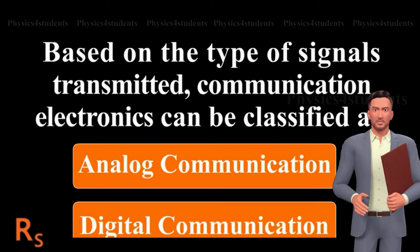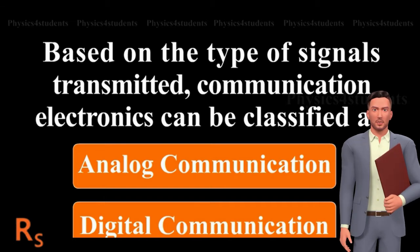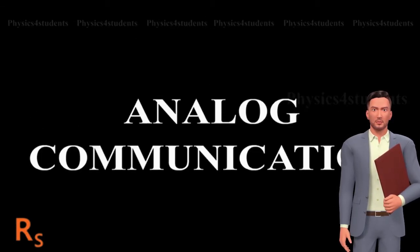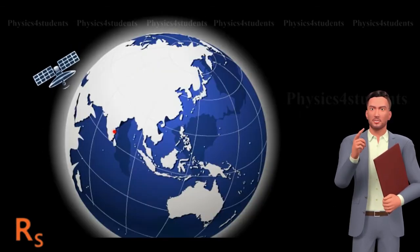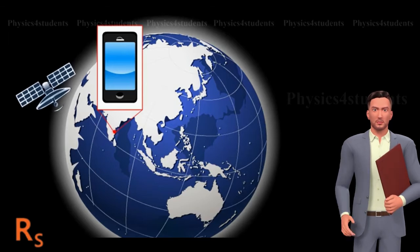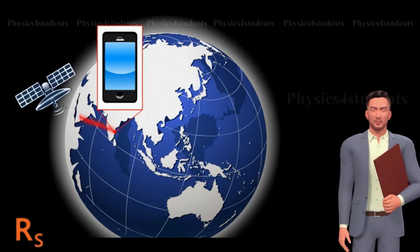Analog communication is a communication method of conveying voice, data, image, signal, or video information using a continuous signal which varies in amplitude, phase, or some other property in proportion to that of a variable. It could be the transfer of an analog source signal using an analog modulation method such as FM or AM, or no modulation at all.